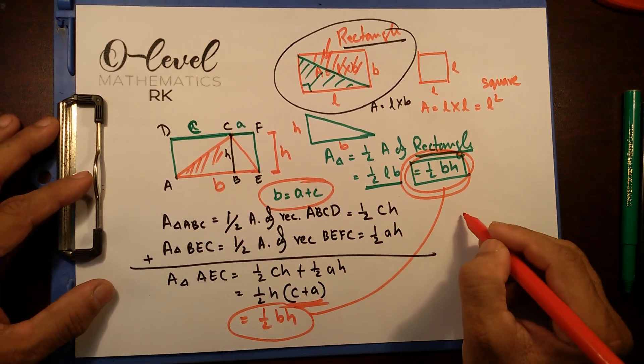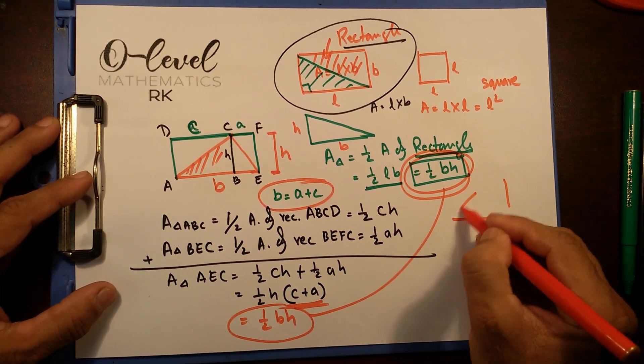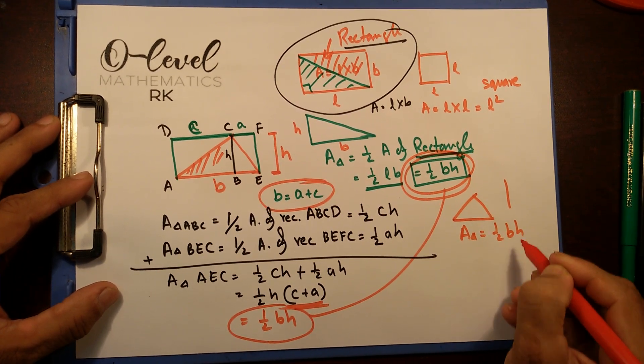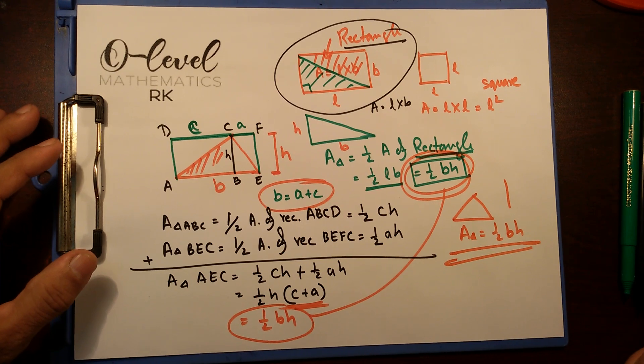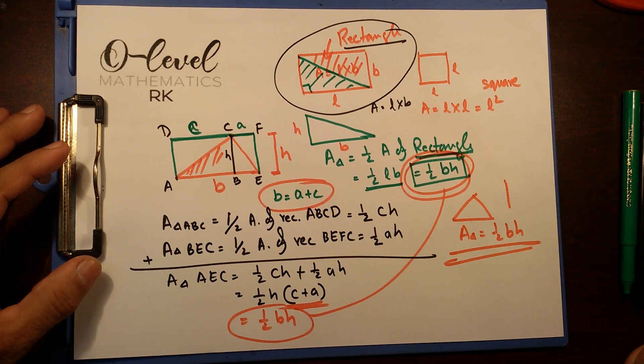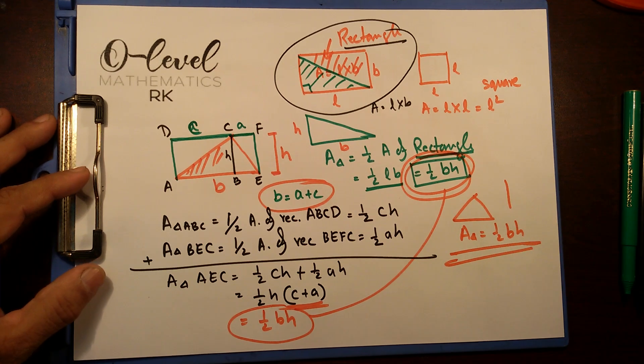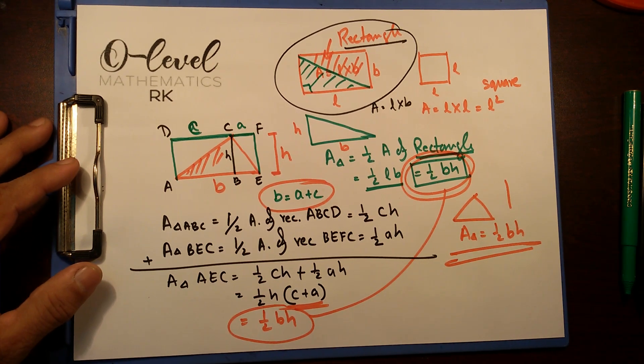So, whenever base is given and height is given, always we can use the area of triangle half base into height. In next video, I'll show you how to find out area of parallelogram, kite and trapezium. See you later. Take care.